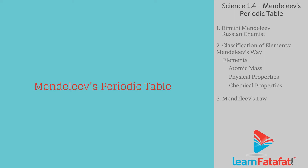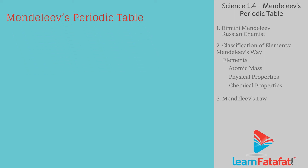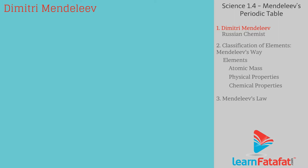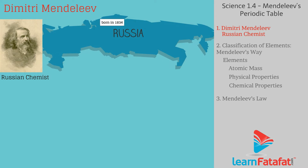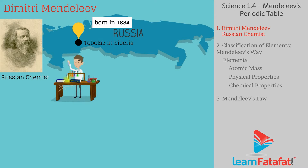Mendeleev's Periodic Table. Dimitri Mendeleev was a Russian chemist, born in 1834 at Tobolsk, Siberia. He studied science in St. Petersburg. In 1856, he got his graduation.